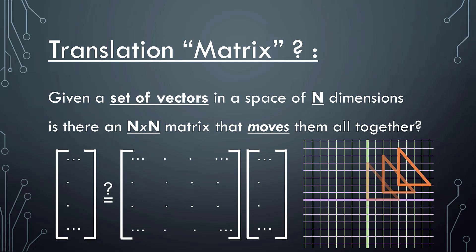In this particular case we have a two-dimensional space and we want to move this triangle, which is the set of these three corners — each of them is a two-dimensional vector. We want to move them all together without changing their relation to each other. We don't want to skew the triangle, we want to maintain its shape and size, we don't want to scale it or rotate it, we just want to move it around.